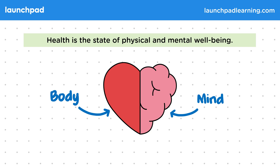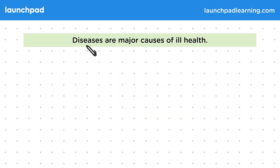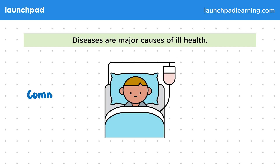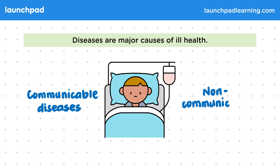So what causes ill health? Diseases are major causes of ill health. Both communicable diseases and non-communicable diseases can cause ill health. Ill health might mean time away from school, work, or responsibilities, and treatments may be expensive.